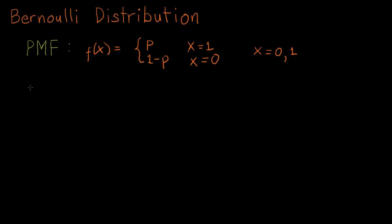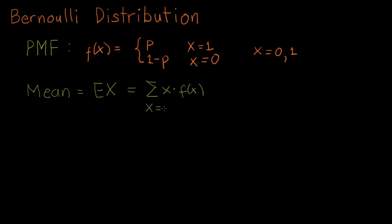Let's derive the mean. The mean is equal to the expectation of x, which is equal to the summation of x times its probability mass function, evaluated when x equals 0 and 1, since our domain of x has only 0 and 1.